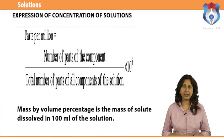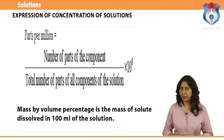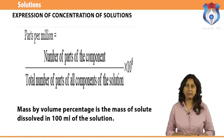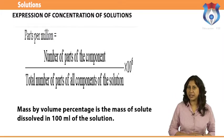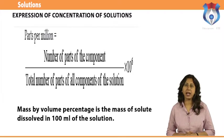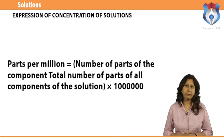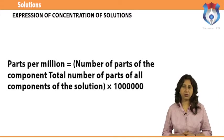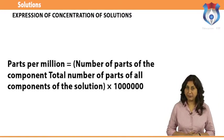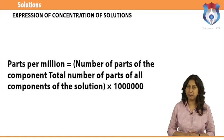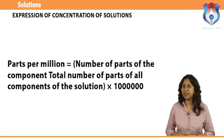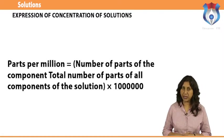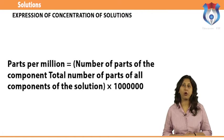Mass by volume percentage (W/V): Another unit commonly used in medicine and pharmacy is mass by volume percentage — it is the mass of solute dissolved in 100 ml of the solution. Parts per million (ppm): When a solute is present in trace quantities, it is convenient to express concentration in parts per million, defined as the number of parts of the component divided by the total number of parts of all components of the solution, multiplied by 10 lakh (10⁶).